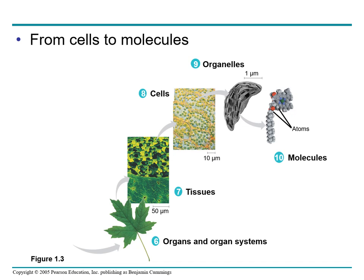After tissues, we have cells. A cell is life's fundamental unit of structure and function. Some organisms consist of single cells which perform all the functions of life. Other organisms are multicellular and feature a division of labor among specialized cells. Then we have organelles. Chloroplast is an example of an organelle — the various functional components present in a cell. The image shows a single chloroplast taken by a powerful microscope.